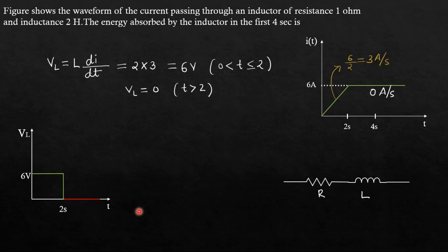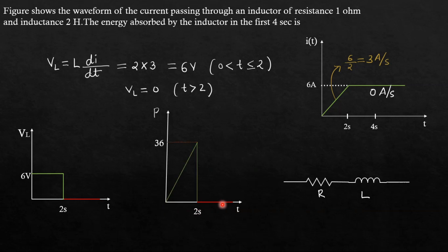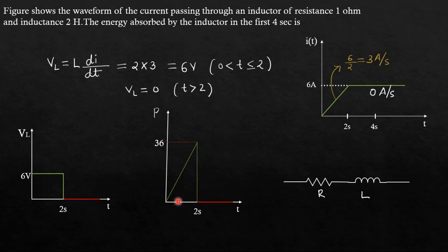Now, power equals voltage times current. After 2 seconds, voltage goes to 0, so the power product also goes to 0. At t = 0, voltage is 6 V but current is 0, so power is 0. At t = 2 seconds, voltage is 6 V and current is 6 A, so power is 6 × 6 = 36 watts. This gives us the power waveform of the inductor.